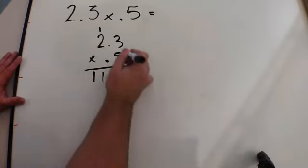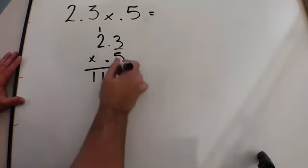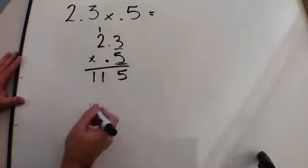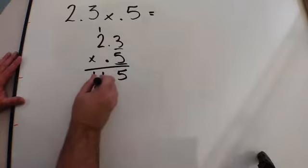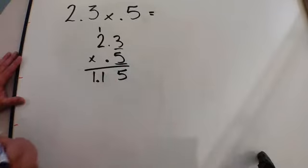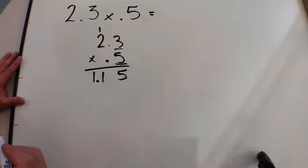And because we have two places that are after the decimal, our answer will also have to have two places that are after the decimal, for an answer of 1 and 15 hundredths.